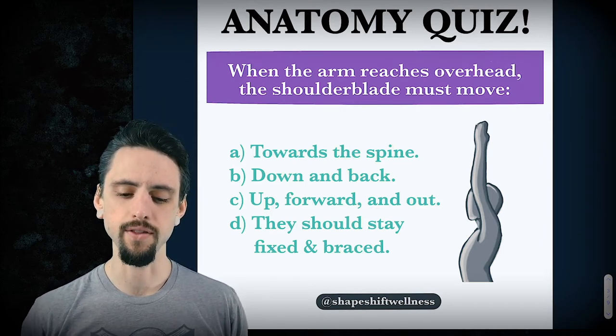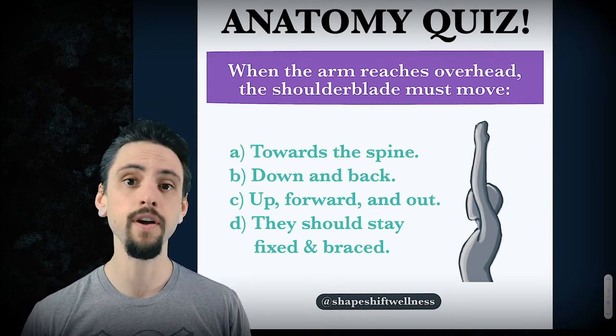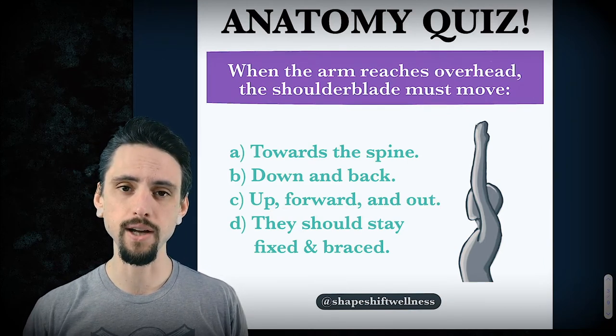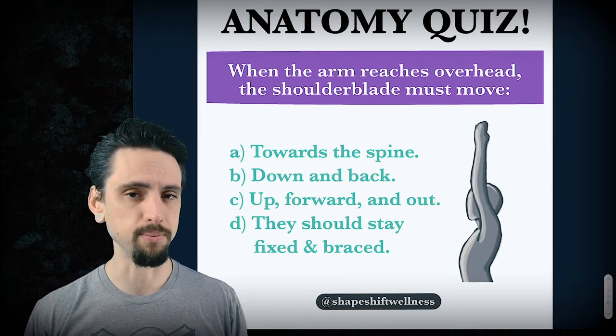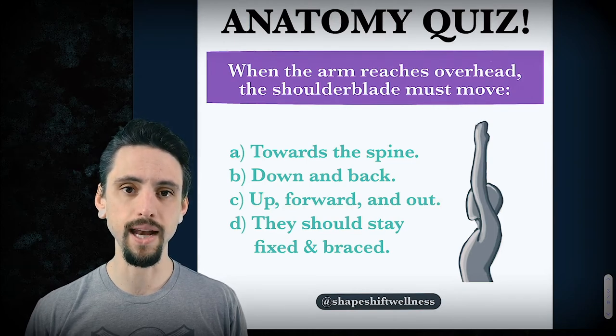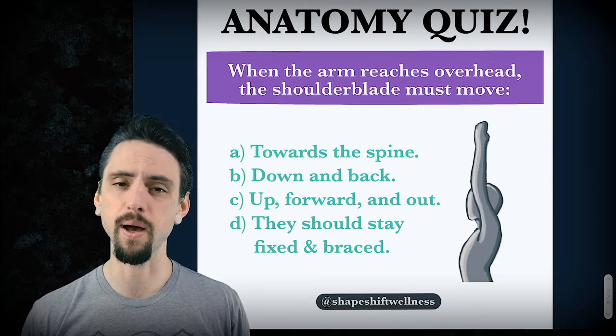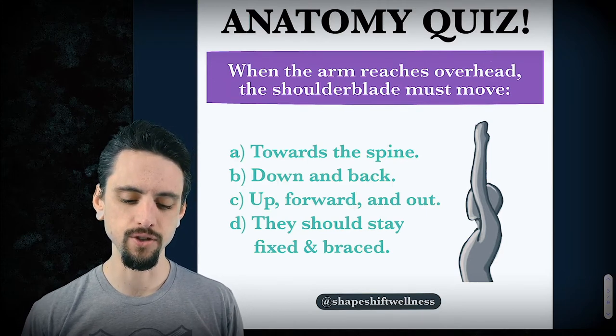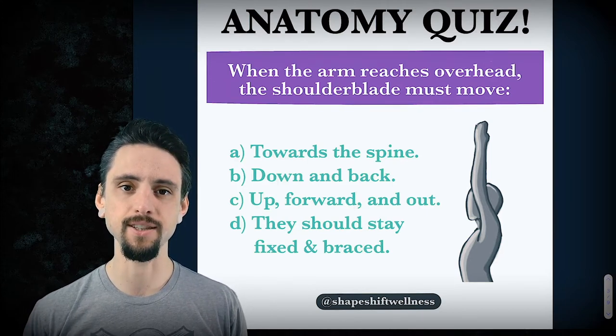When the arm reaches overhead, the shoulder blade must move towards the spine. I don't know, a lot of teachers tell you to retract your shoulder blades. Down and back, that's a popular cue. Up, forward and out is the opposite of the most popular cue I tend to hear in yoga and fitness and just generally that they should stay fixed and braced.